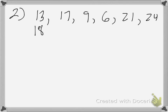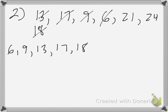The first thing we're going to do is rewrite the data set in order, crossing them off as I go so I don't miss any. Starting with the lowest: 6, then 9, then 13, then 17, then 18, then 21, and finally 24.